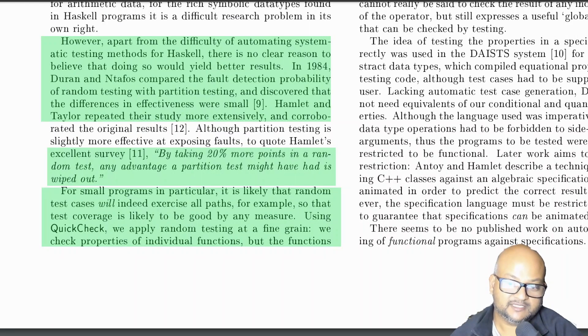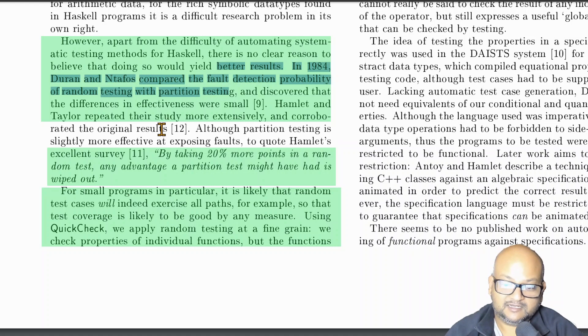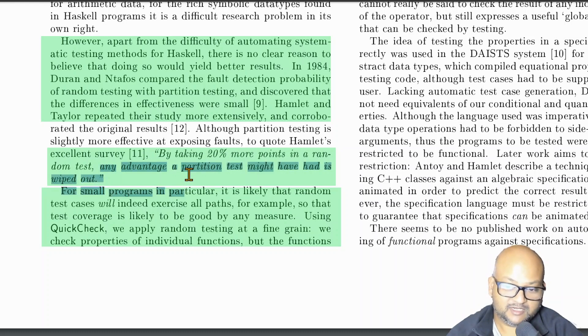The authors here also cite some prior work that compares the effectiveness of random testing with that of partition testing, which actually looks at the control flow of the code under test. And in that work, the authors found that by taking only 20% more tests for your random test, you get the same level of confidence as a partition test. And that is pretty compelling because a randomized testing setup like QuickCheck is much more lightweight and much easier to implement and manage than an in-depth testing framework that looks at control flow and so on.